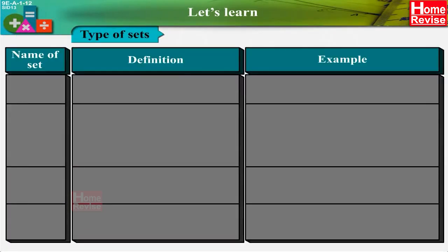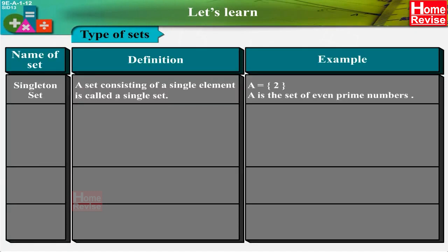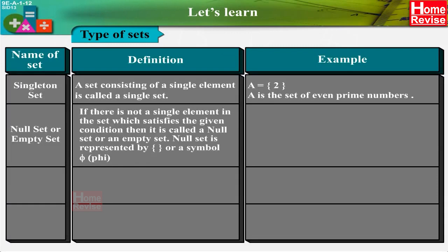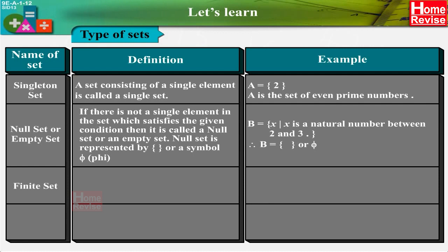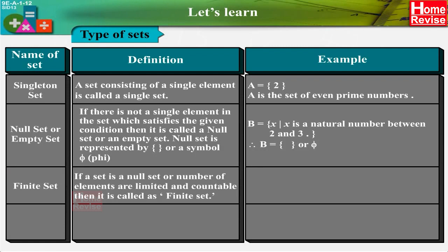Let's learn types of sets. Singleton set: A set consisting of a single element is called a singleton set. Example: A = {2}, the set of even prime numbers. Null set or empty set: If there is not a single element in the set which satisfies the given condition, it is called a null set or empty set, represented by {} or φ. Example: B = {x : x is a natural number between 2 and 3} = φ.